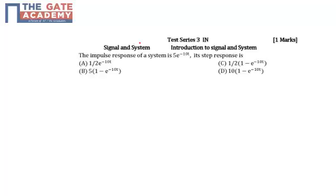Hello students, the following question is from Test Series 3, subject Signals and Systems, chapter Introduction to Signals and Systems. The question is: if the impulse response of the system is 5e^(-10t), then its step response is?